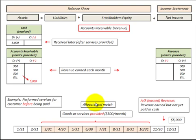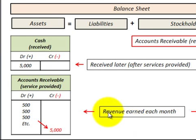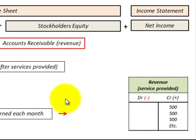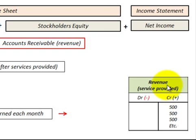What we have to do is allocate the accounts receivable to the revenue account and net income. So for the goods or service provided at five hundred dollars per month, we would debit — or increase — accounts receivable, and the corresponding credit entry would be five hundred dollars per month to the revenue account, increasing revenue by that amount.